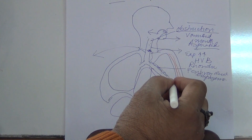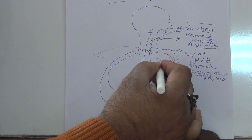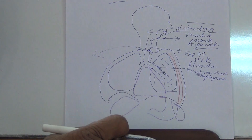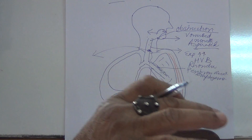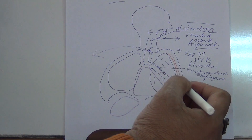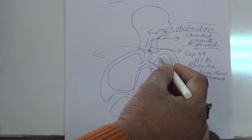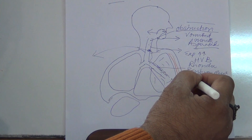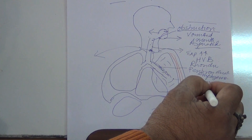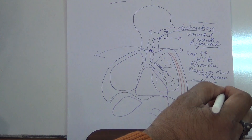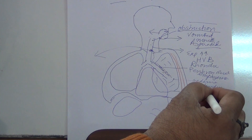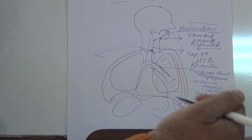Another cause of breathlessness is multiple lacerations in the lung caused by shock waves, as occurs in submariners exposed to depth charge explosions. These lacerations can lead to pulmonary edema - fluid in the lung - which causes crepitus on auscultation and breathlessness.